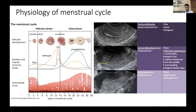You can see the endometrial changes on ultrasound scan. Initially it is thin during the proliferative phase, but at the end of the late proliferative phase there will be a trilaminar endometrium. At the secretory phase, because it is congested, it appears more thick and hyperechoic with a homogeneous appearance.